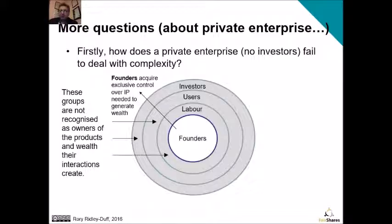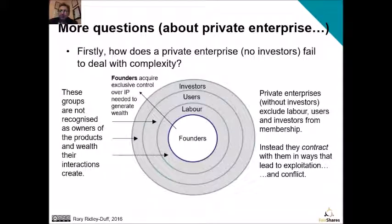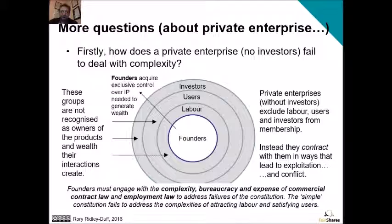That's just a by-product of this type of enterprise, because if you are an employee, all the intellectual property that you create goes to the owners of the business. And if there's just a small enterprise with one or two owners, they acquire all the IP through their exclusive shareholding. Private enterprises without investors exclude labour, users and investors from membership. Instead, they enter into a series of contracts in ways that lead to exploitation and conflict. So founders have to engage with the complexity, bureaucracy and expense of commercial contract law and employment law to address the failures in their constitution. The simple constitution fails to address the complexities of attracting labour and satisfying users.